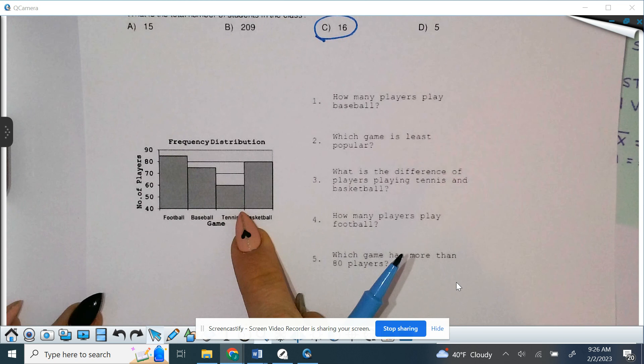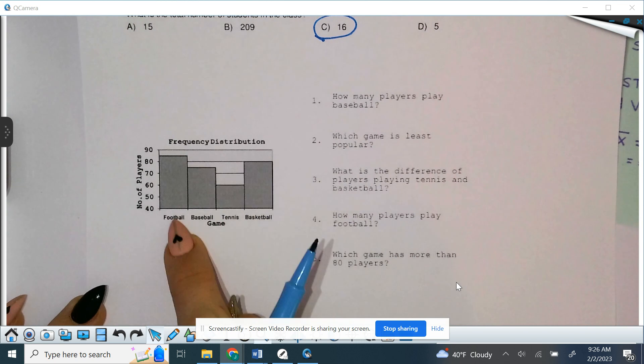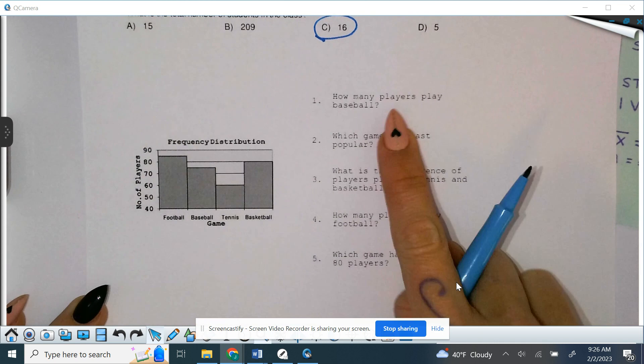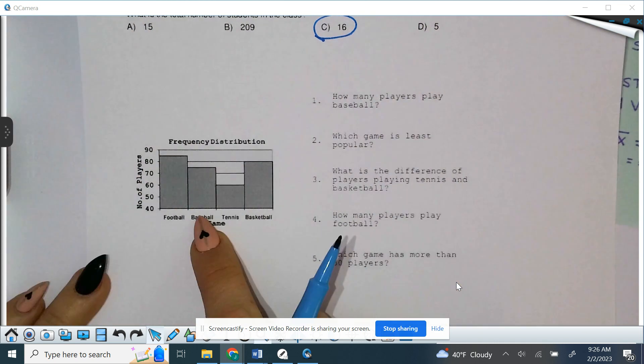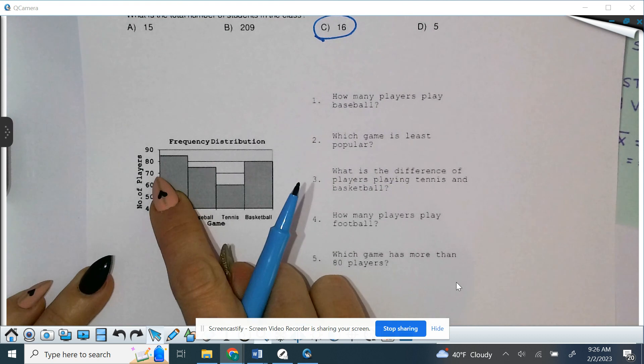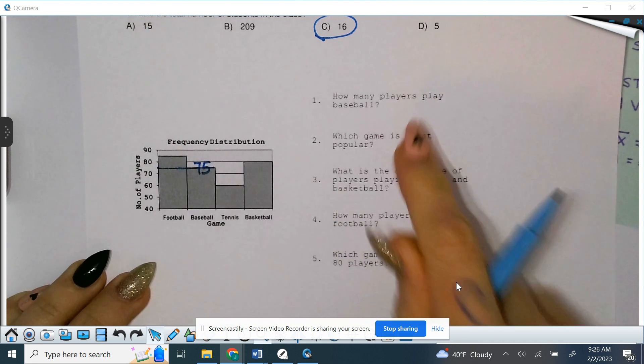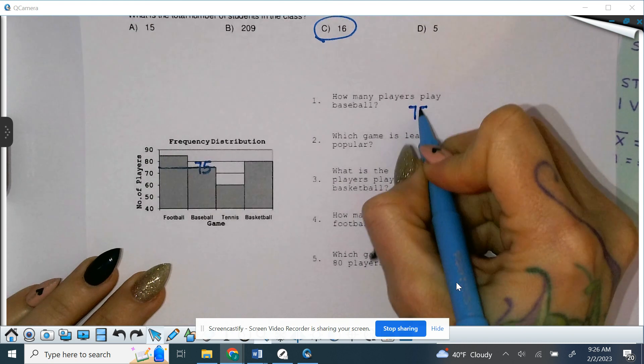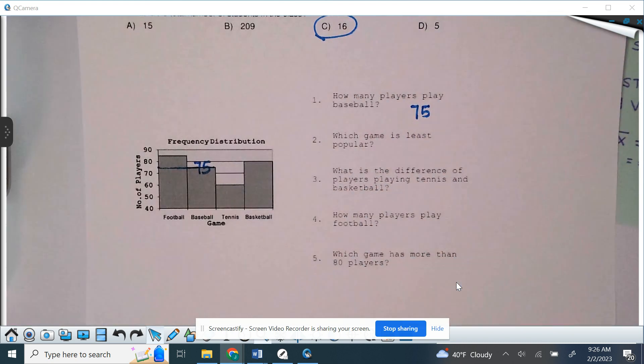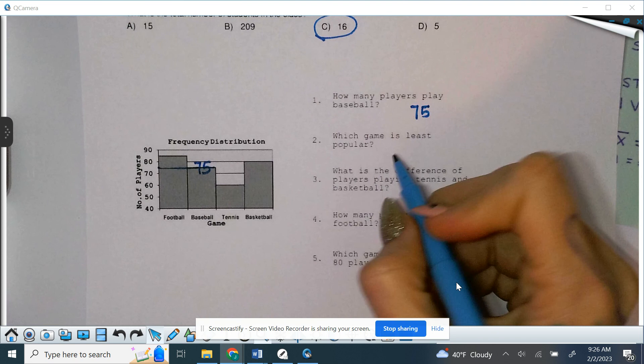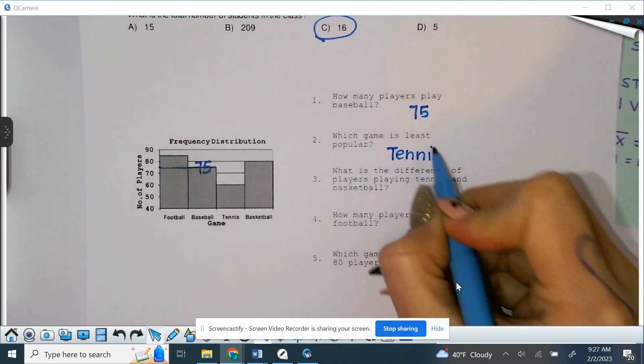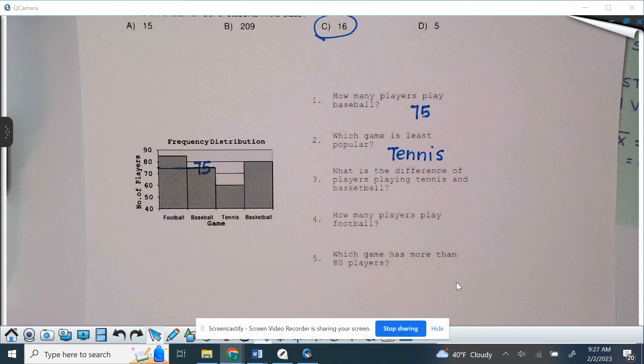Frequency distribution, again. That's what this table is called. So, how often did these things happen? So, like I said, they can be titles, like, instead of numbers. Instead of intervals. So, how many players play baseball? You're going to go to your baseball. Notice that it is numbered by tens. And, it's about halfway through. So, we could easily call that 75. So, how many players play baseball? 75. Which game is the least popular? So, which one has the smallest bar? You guys tell me. Football, baseball, tennis, or basketball? Yeah, thank you, thank you, thank you.